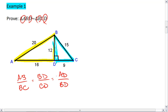I look at the numbers. AB is 20, BC is 15, BD is 12, while CD is 9, AD is 16, BD is 12.